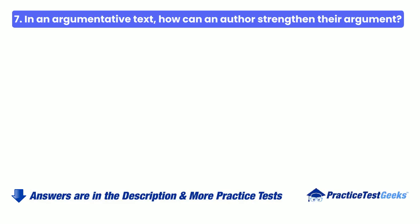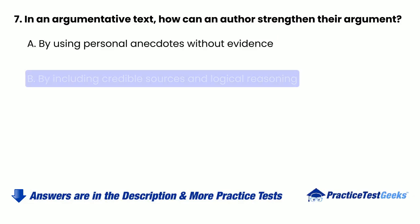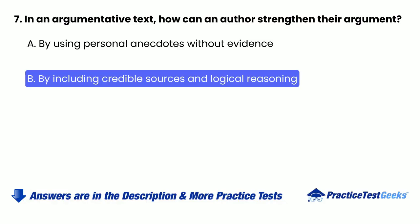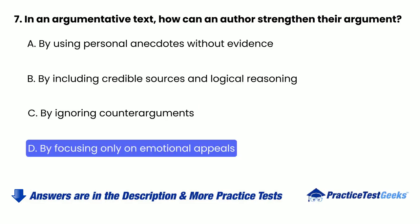7. In an argumentative text, how can an author strengthen their argument? A. By using personal anecdotes without evidence. B. By including credible sources and logical reasoning. C. By ignoring counter-arguments. D. By focusing only on emotional appeals.